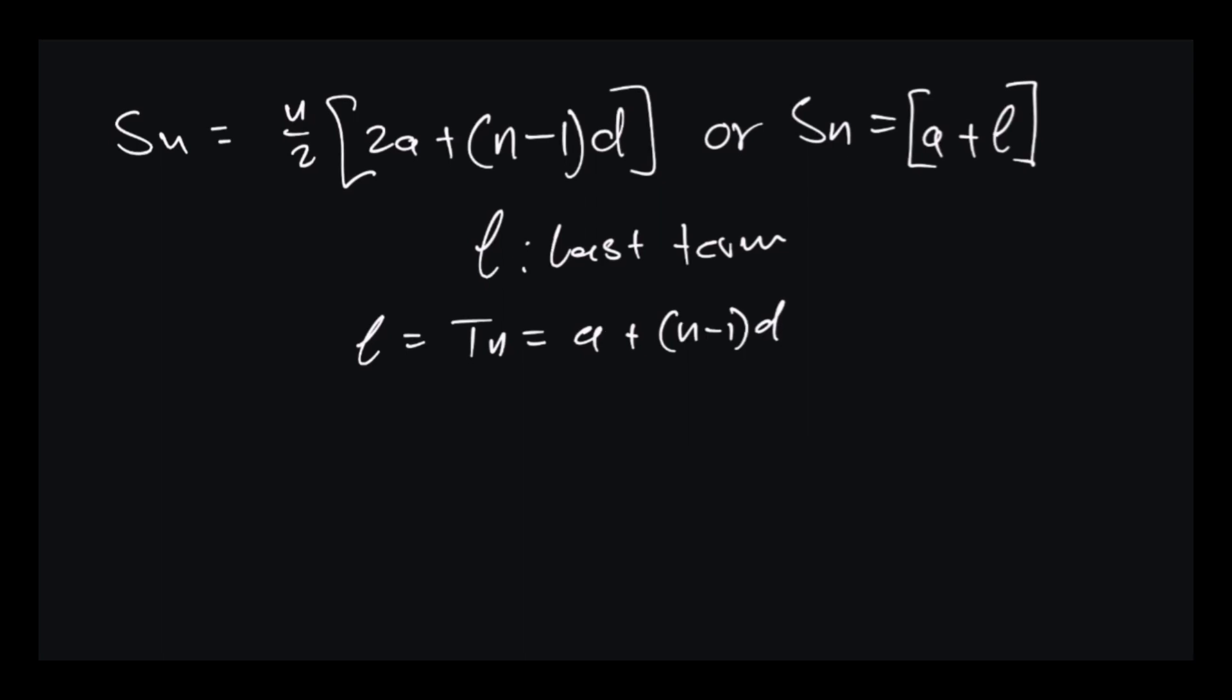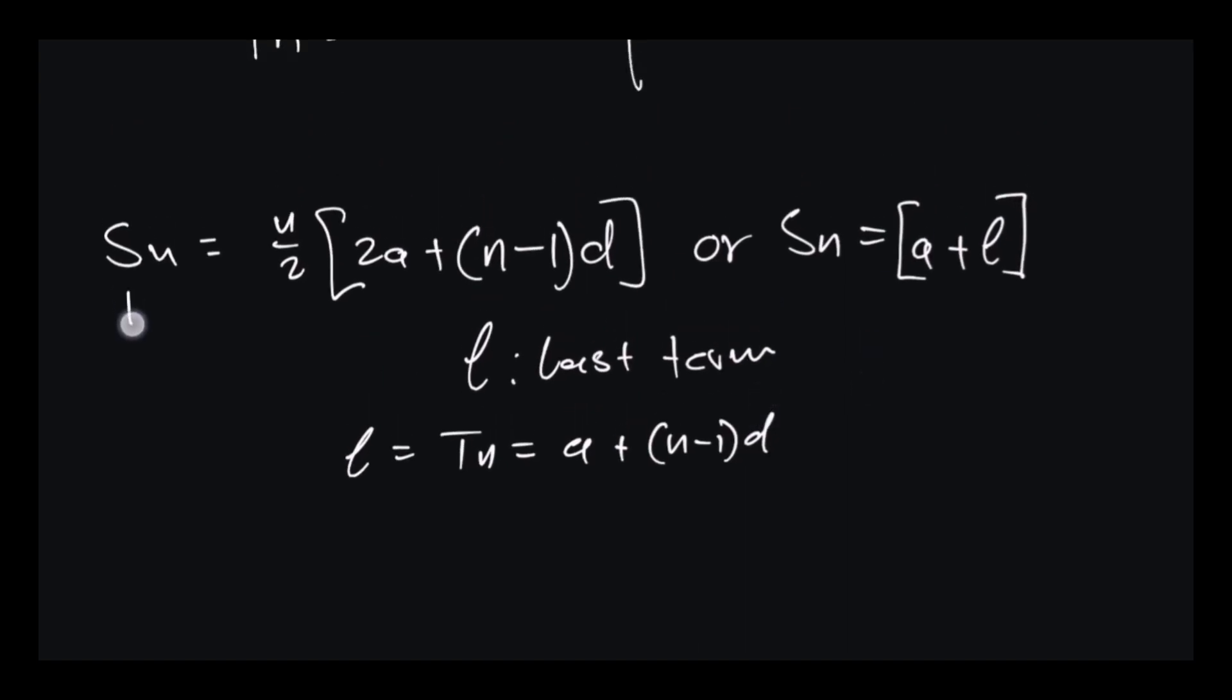So now you have to know we have to define each and every variable as we have always done in the previous videos. So your Sn right here is the sum of n. Your n right here is the position as we have always seen. Your a right here is the first term as it has always been, and your d is the difference.